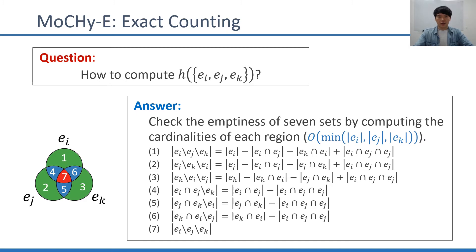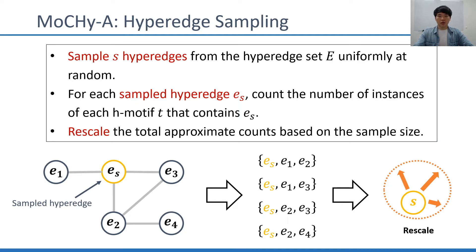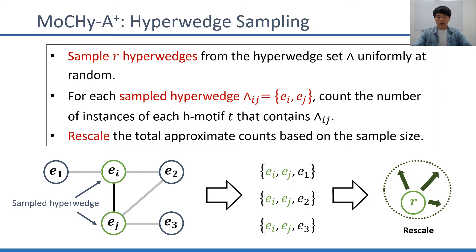Mochi-A is an approximate counting algorithm. Instead of enumerating all instances of H-motifs in the input hypergraph, it samples only a small fraction of hyperedges and then estimates the total counts. Intuitively, more samples leads to better accuracy. We show in the paper that Mochi-A yields unbiased estimation. Mochi-A-plus is similar to Mochi-A, but it samples hyperwedges instead of hyperedges. This also yields unbiased estimation with a better tradeoff between speed and accuracy than Mochi-A. We provide all proofs in the paper and the empirical results in later slides.